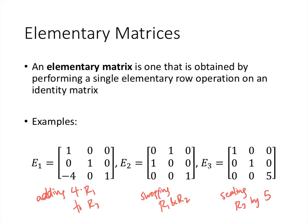Those were the three different row operations: replacement, swapping, and scaling. When we do one of those operations to the identity matrix, we call the result an elementary matrix.